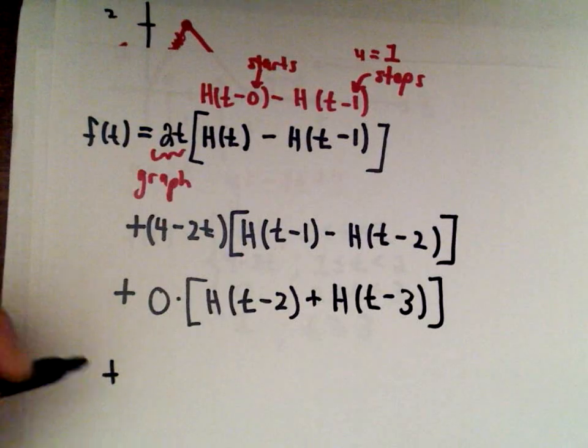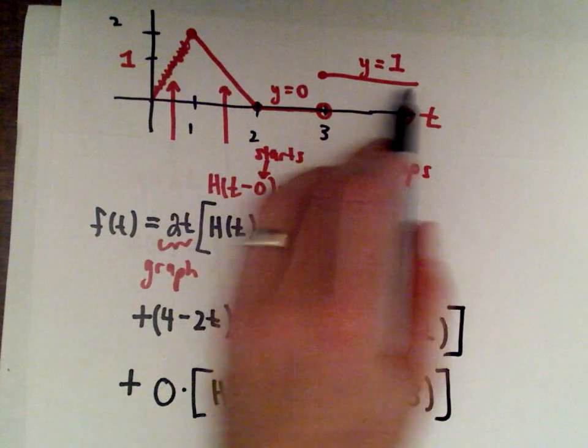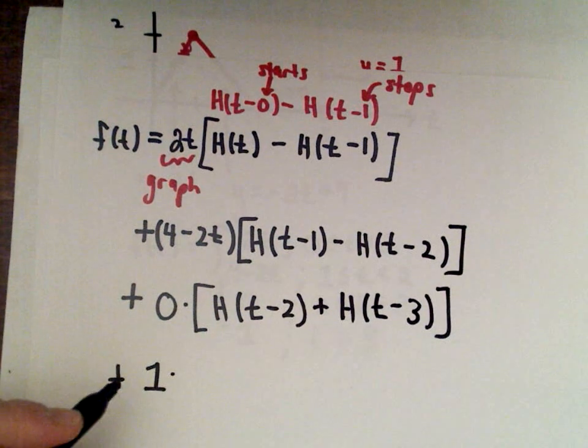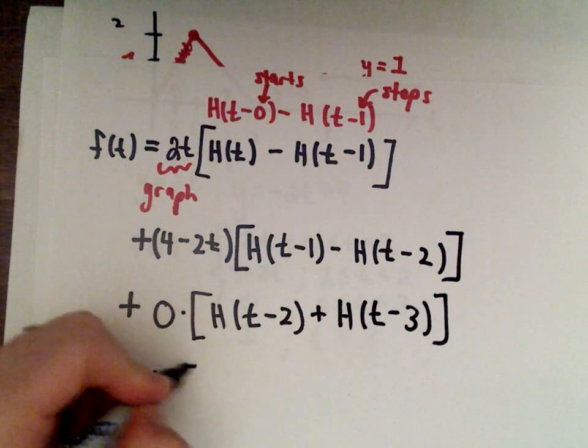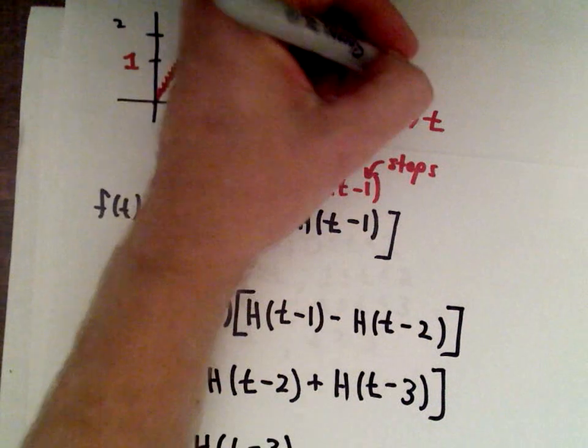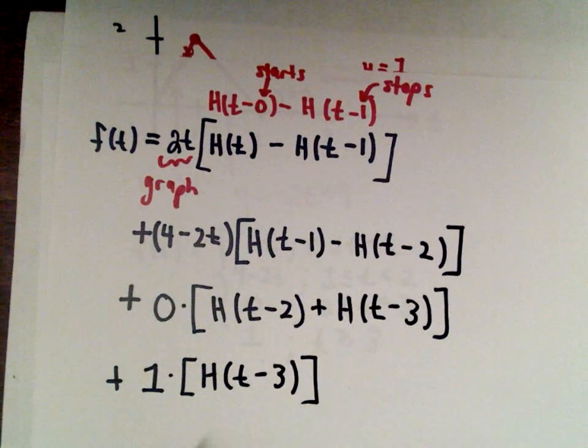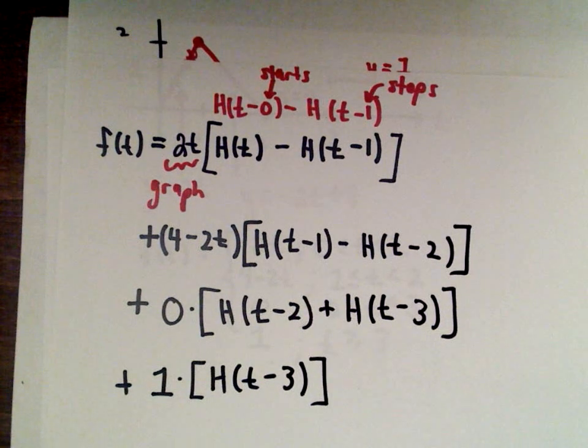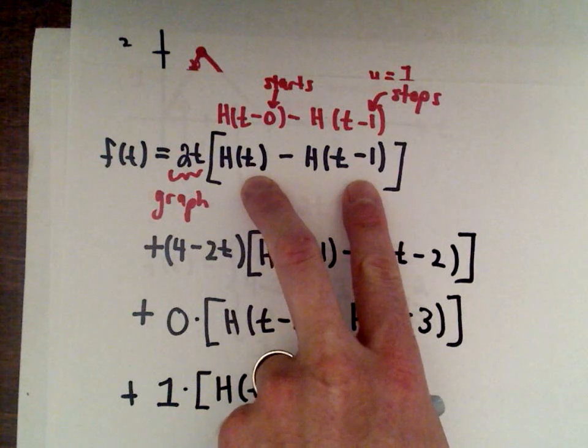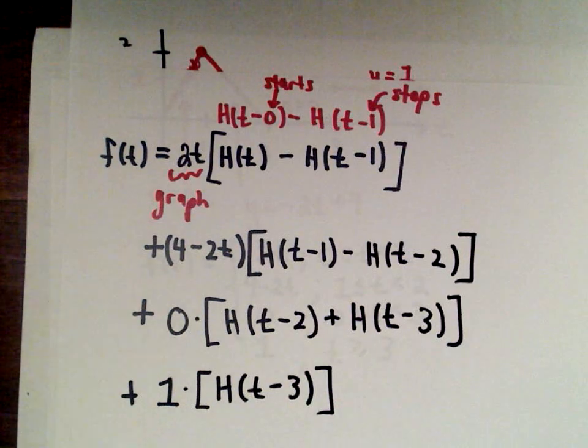And last but not least, the last section of the graph that corresponds to the function y equals 1. So there's my function y equals 1, and we said this one started at t equals 3. And since it just keeps going on forever and ever and ever, we'll just leave this with this expression just involving one term. And that's it, that would be your solution. So f of t would be 2t multiplied by h of t minus h of t minus 1, plus the second part, plus the third part, plus the fourth part.